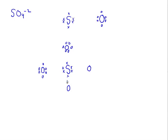We have sulfur surrounded by four oxygen atoms. Let's draw all the valence electrons for each atom. The first step is to bond any possible bonding electrons — for example, an electron from oxygen bonds with an electron from sulfur, and another oxygen electron bonds with another sulfur electron. However, we have a charge of negative two, which means we can add an additional two electrons.